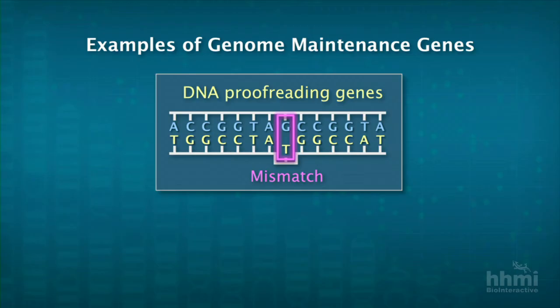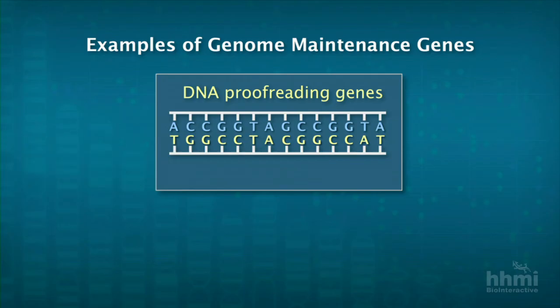Here's an example of a mistake that was made: there's a G which should have had a C, but there was a T put there by mistake. A proofreading enzyme cruises across the DNA, stops, recognizes that mistake, fixes it, and moves on to scan the rest of the DNA for other errors. This proofreading system is pretty good, but one in a billion bases can be mutated and get missed.